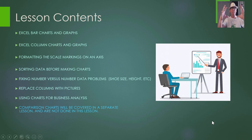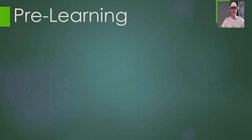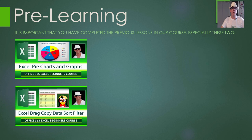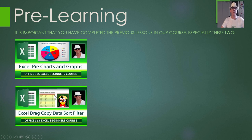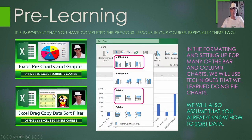This lesson is jam-packed already with things to do. For the pre-learning, you need to have done two of our previous lessons at least. Make sure you've done the Excel pie charts and graphs lesson, where we covered formatting in different colors on your charts, which we'll be doing again today. Also the sort part of the drag, copy, sort, filter lesson, because we're going to be doing some sorting.